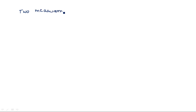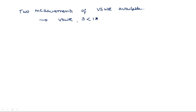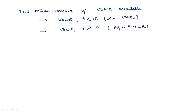There are two different types of VSWR measurements. The first is low VSWR, where S is less than 10. The second is high VSWR, where S is greater than 10. These are the two measurements we generally consider for measuring VSWR.